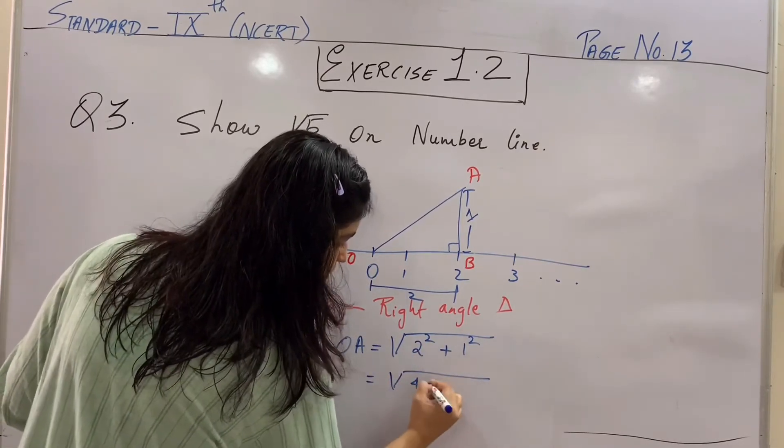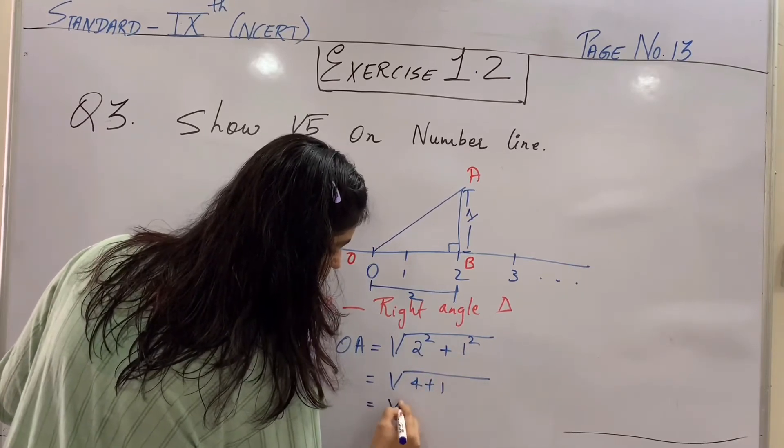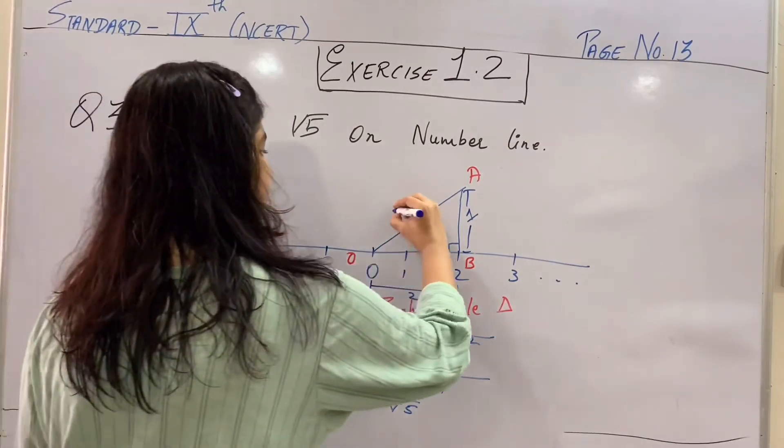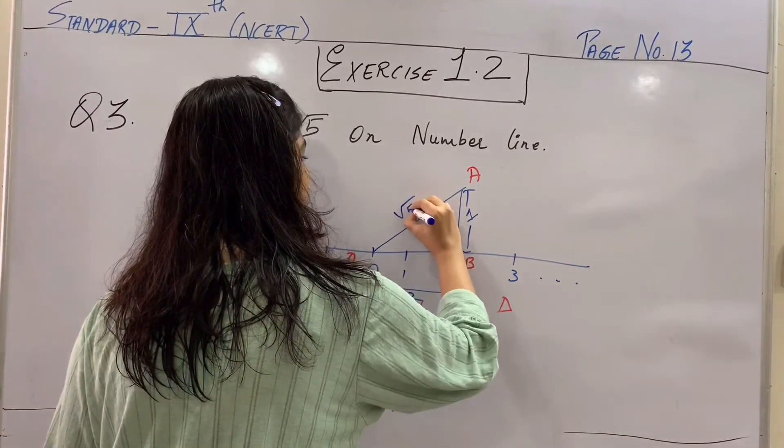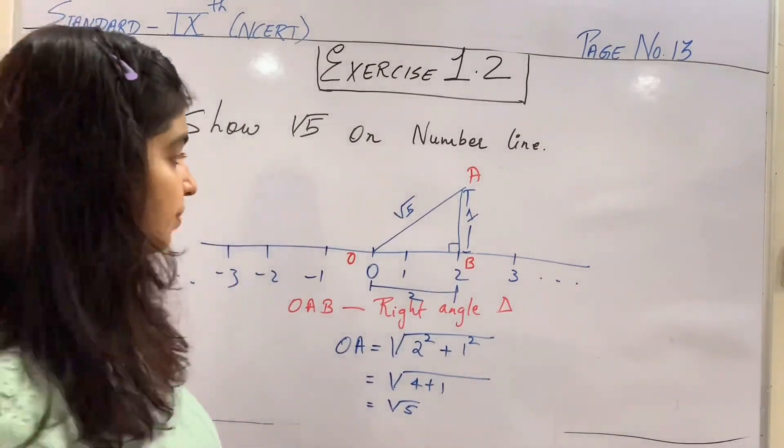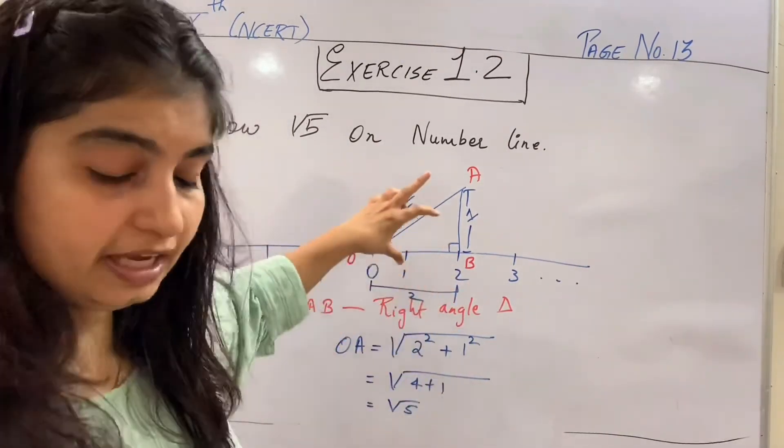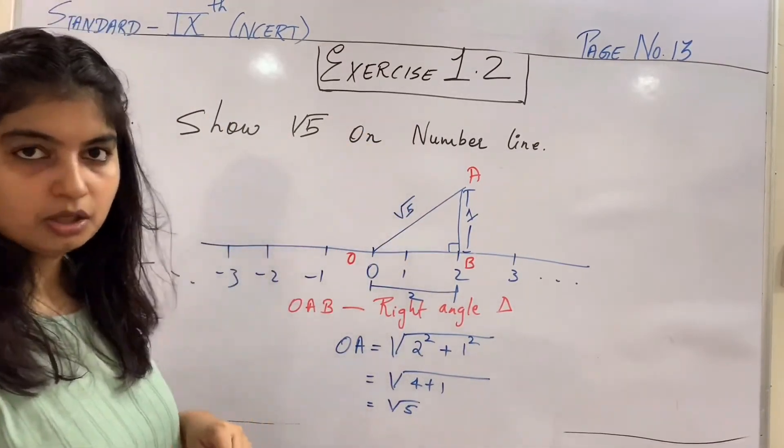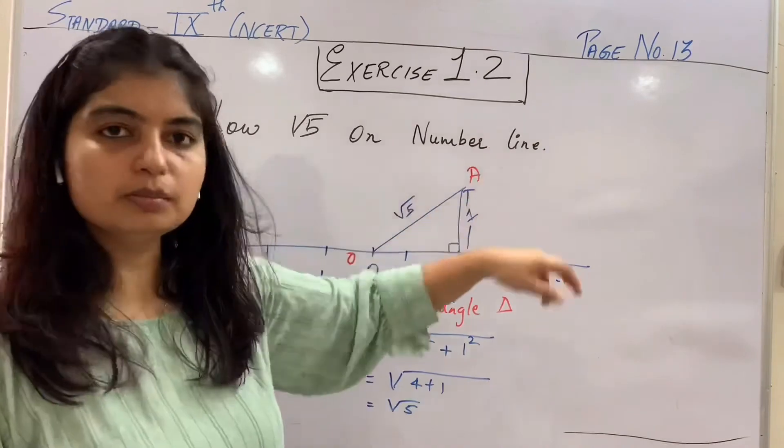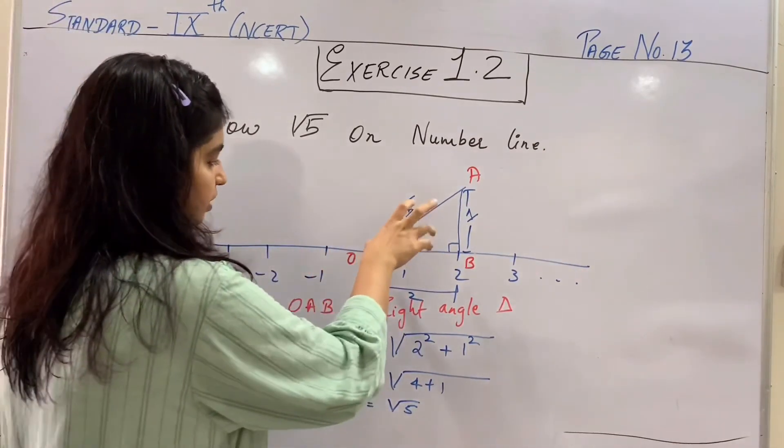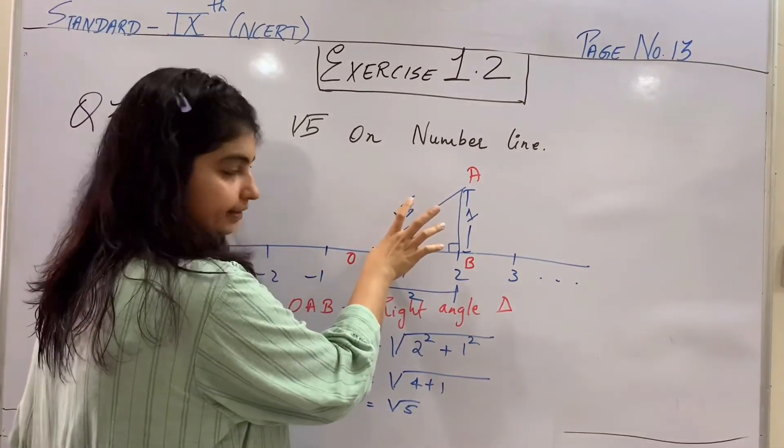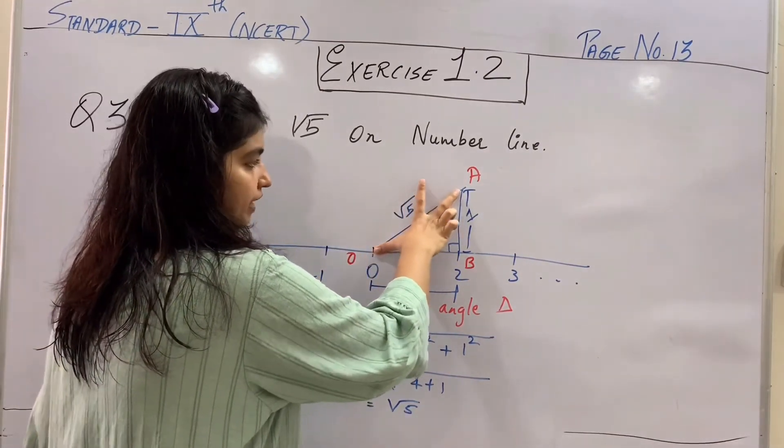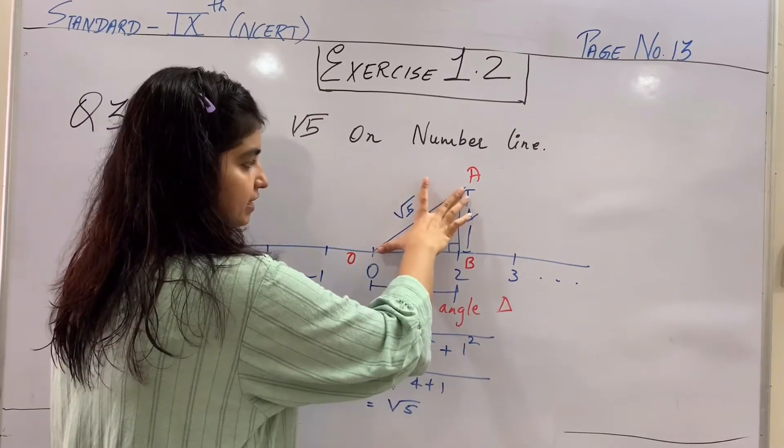Base aur altitude ka square banega. That is 2 square plus 1 square. Yeh how much? 2 square is 4, plus 1 square is 1. So yeh bana aapka root 5. Clear? So this particular length of yours is root 5. Got it? Abhi yeh toh aapki bani slant length. Yeh aapki incline length hai root 5 jo OA se represented hai.